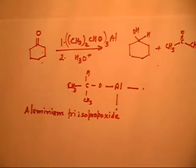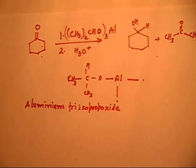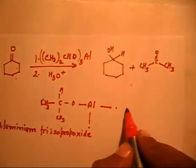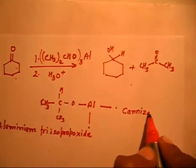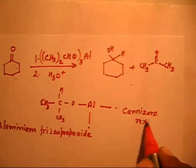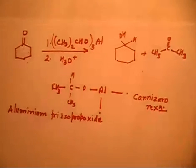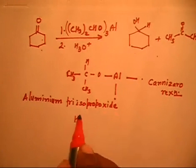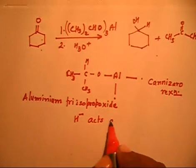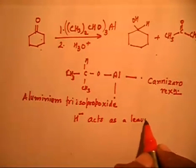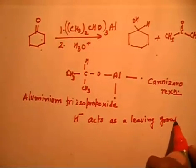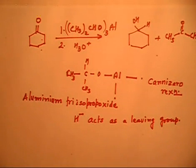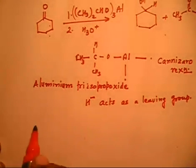The mechanism of this process is closely related to the Cannizzaro reaction. In the Cannizzaro reaction, a hydride ion acts as a leaving group — and in this case also, a hydride ion (H minus) acts as a leaving group. So we need to propose the mechanism for this reaction.